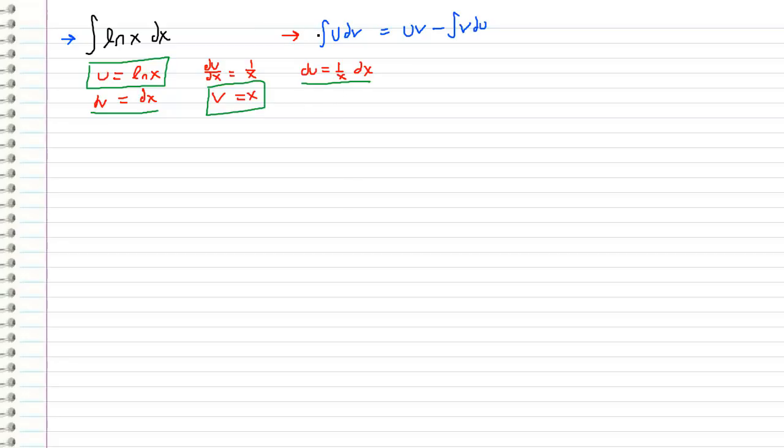And using this, we're going to substitute this back into the integration by parts formula and come up with an answer. So we have the integral of u dv, which is the integral of natural log of x times dx, which is what we want to evaluate.